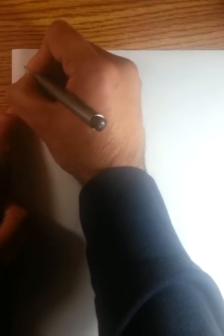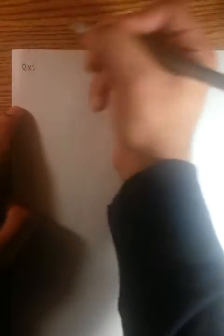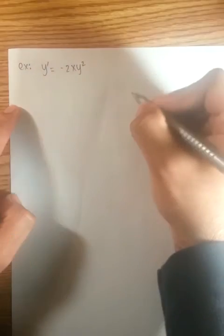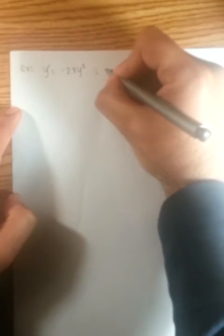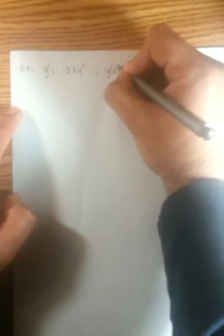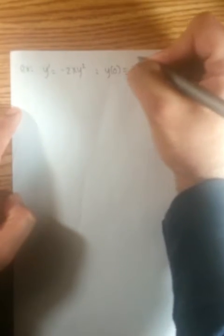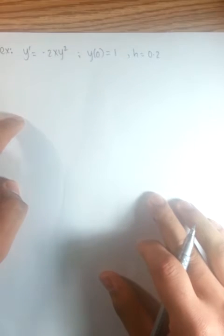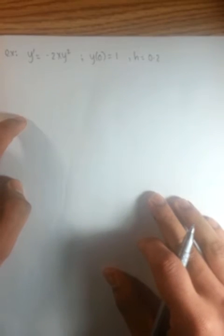So let's look at an example which says y prime is equal to negative 2xy to the power of 2, and the initial conditions given to you is y at 0 is equal to 1, and also your step size h is equal to 0.2. These are the conditions that are given to you.